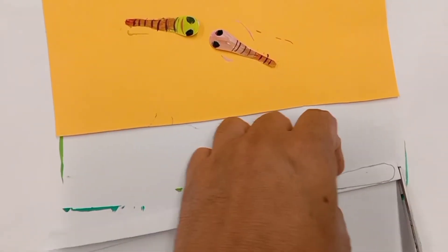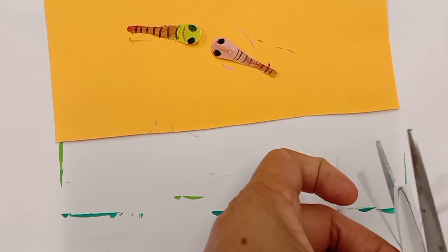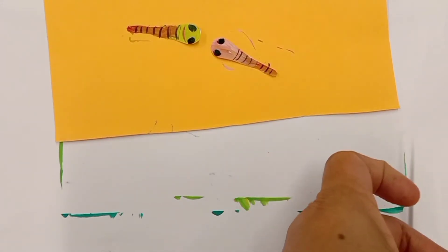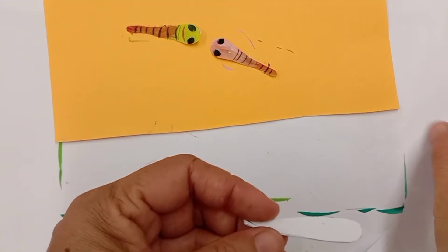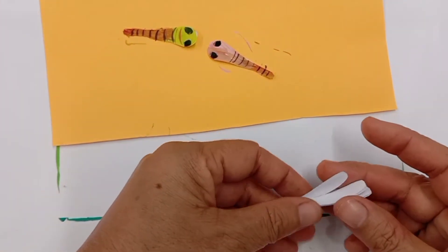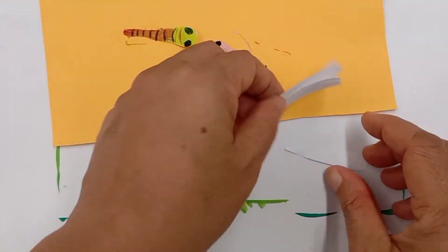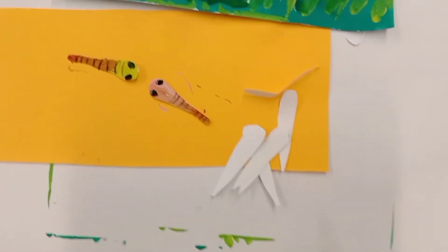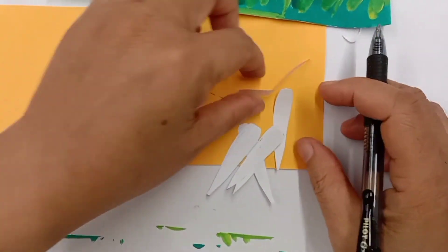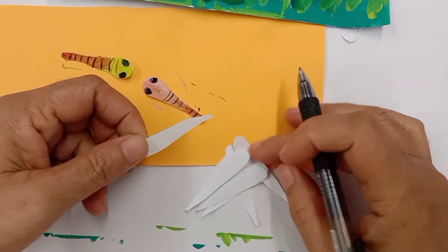Then we cut. Okay, so instantly we have eight pieces of wings. Now we're going to draw on our wings.